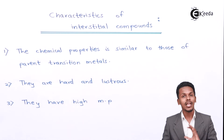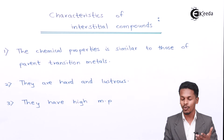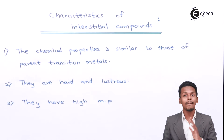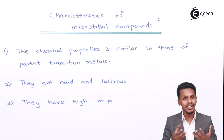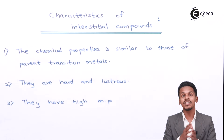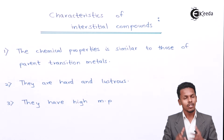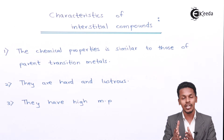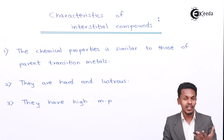Regarding characteristics: they are hard and lustrous. Metals are already hard and lustrous, but by acquiring impurities like carbon, hydrogen, and nitrogen, the interstitial compound will have certain properties higher compared to the parent atom. For example, the interstitial compound will have a higher boiling point and melting point.